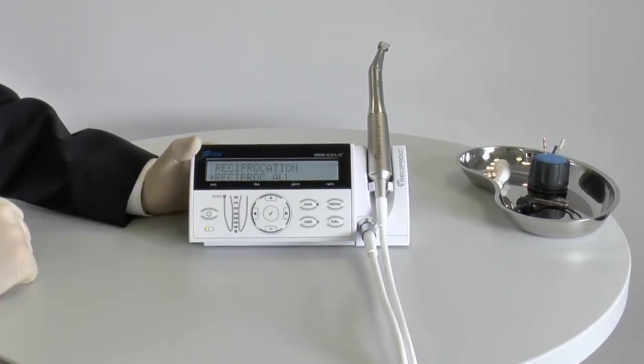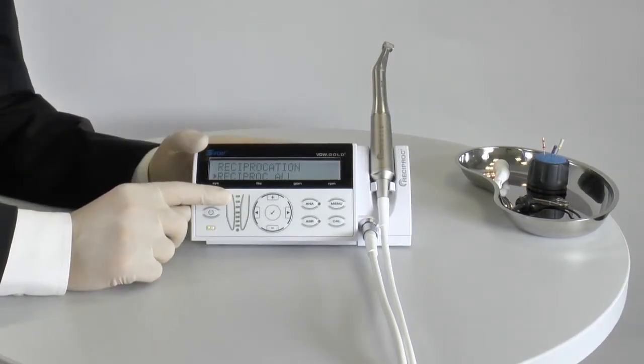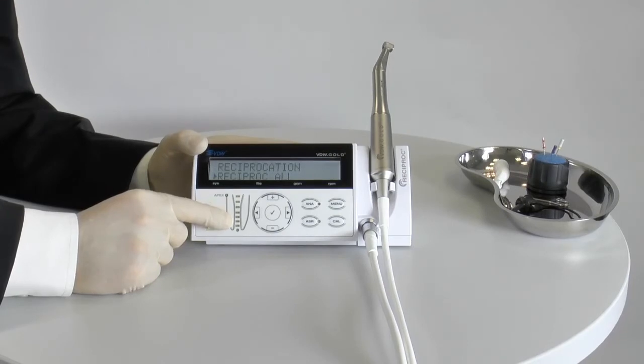The VDW Gold reciproc comes with an integrated apex locator. The LED indicator for electronic length determination is located on the left. More details on this in a separate video.